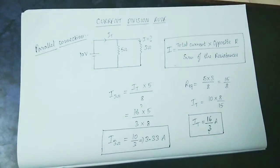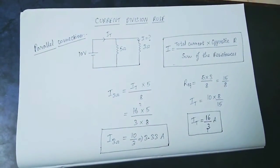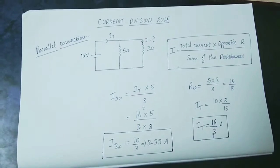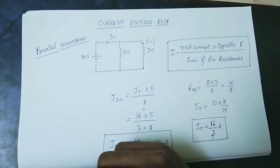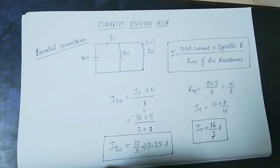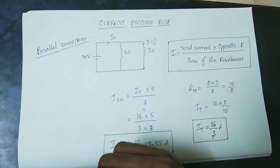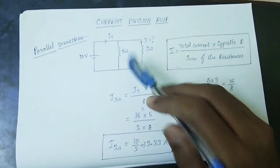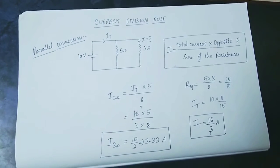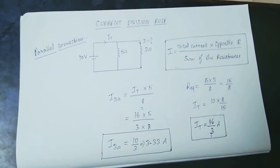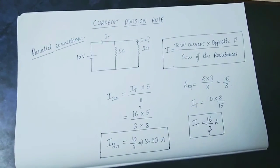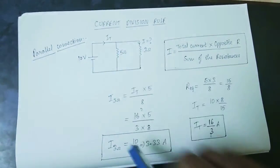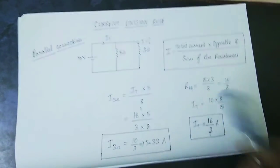What is the current flowing through the 3 ohm resistor? Using the current division rule, the total current is found first. The equivalent parallel resistance is R1 into R2 divided by R1 plus R2, which gives 5 into 3 divided by 5 plus 3, equal to 15 by 8 ohms.